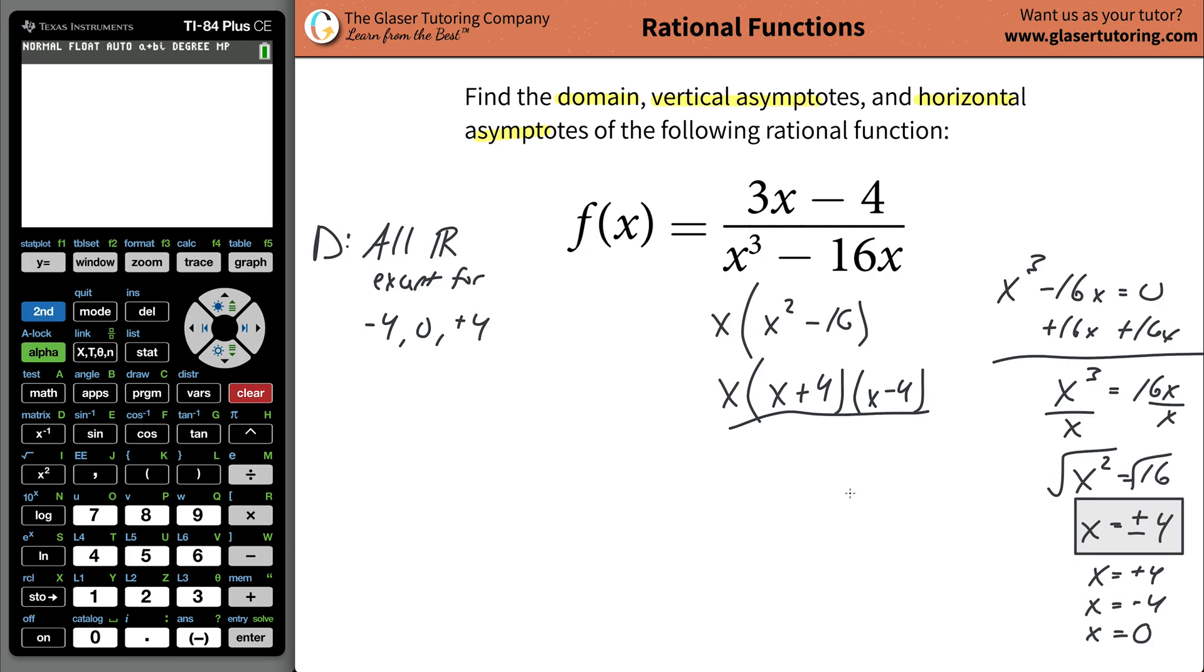But anyways, so basically, the vertical asymptotes here are going to be all of these values down here. These are the equations. You have three vertical asymptotes. There's going to be three of them. Vertical asymptotes.